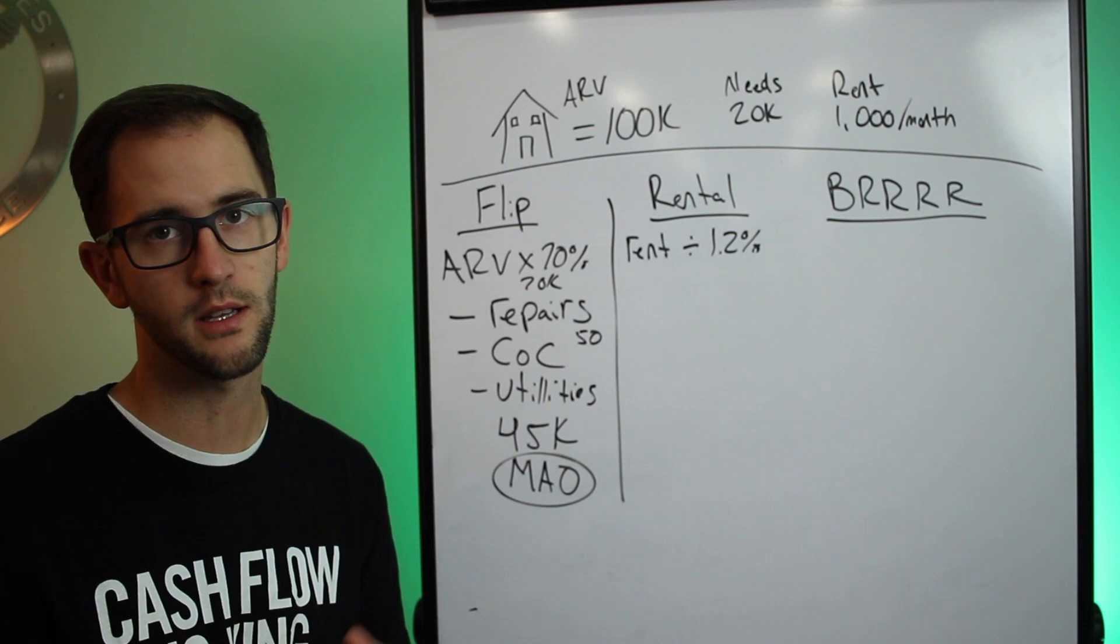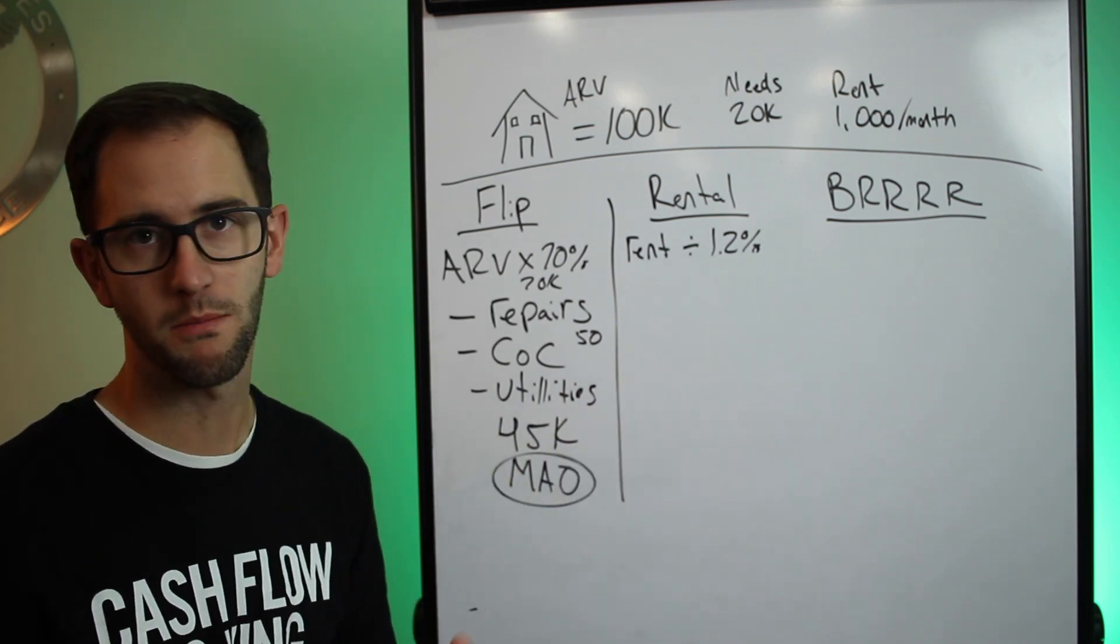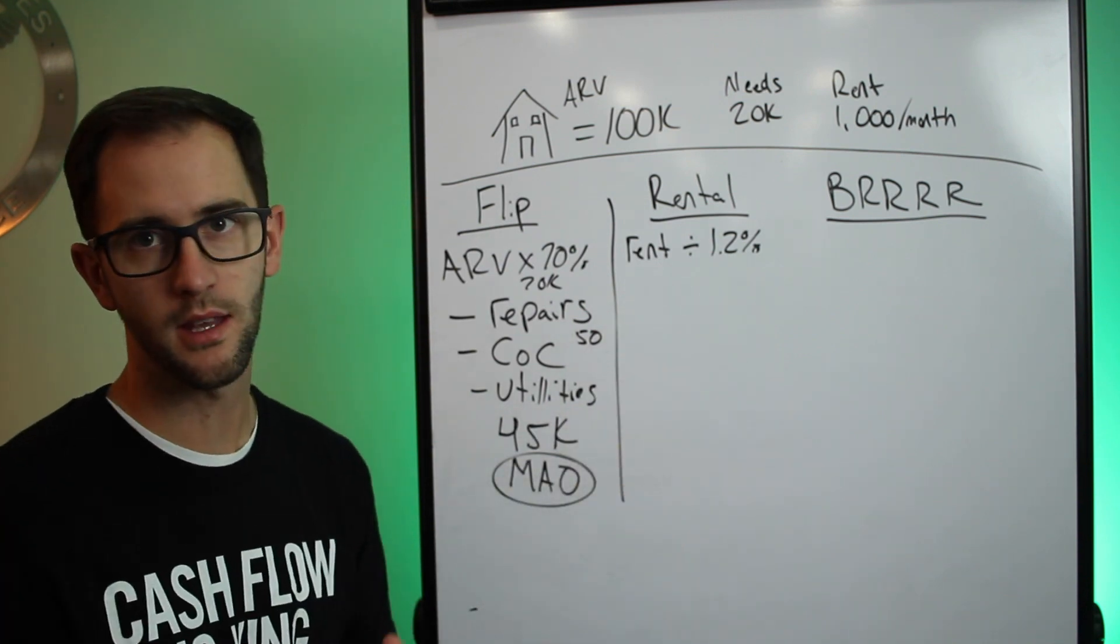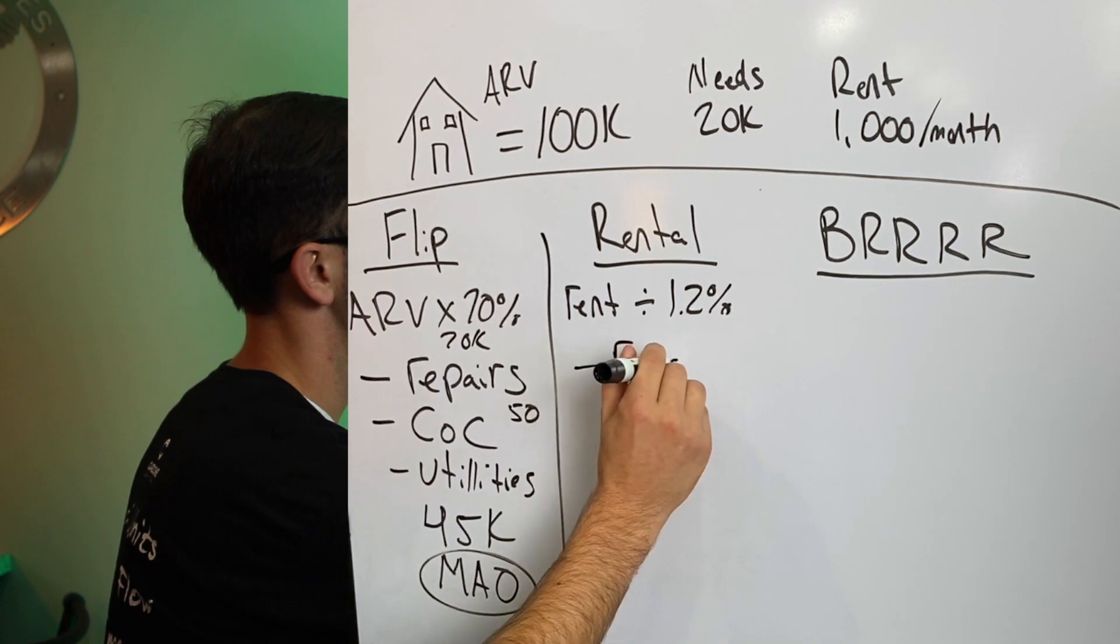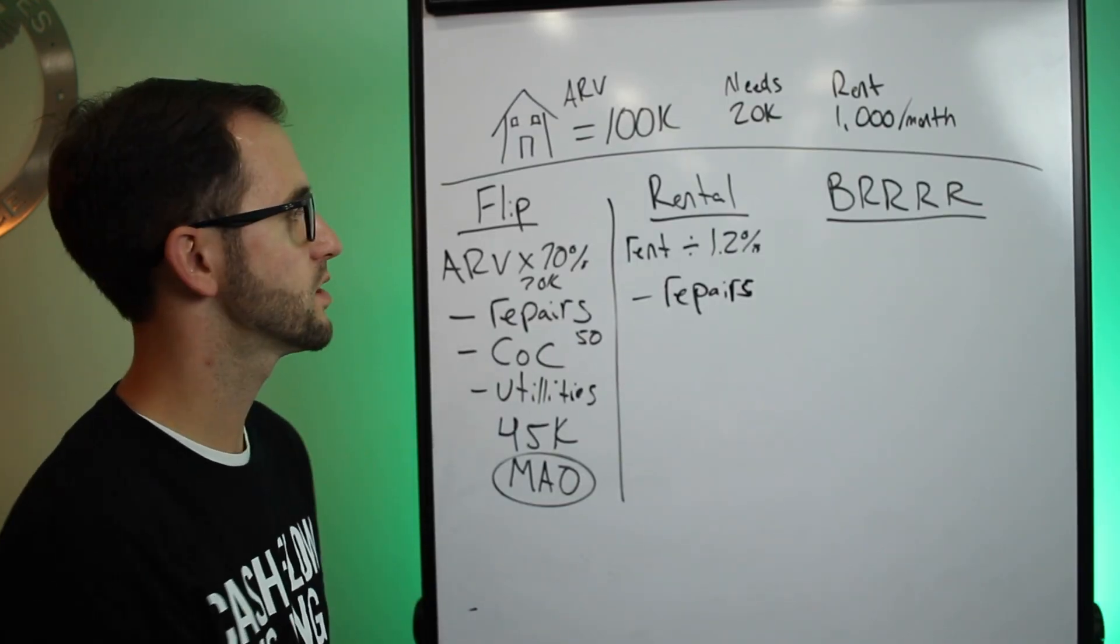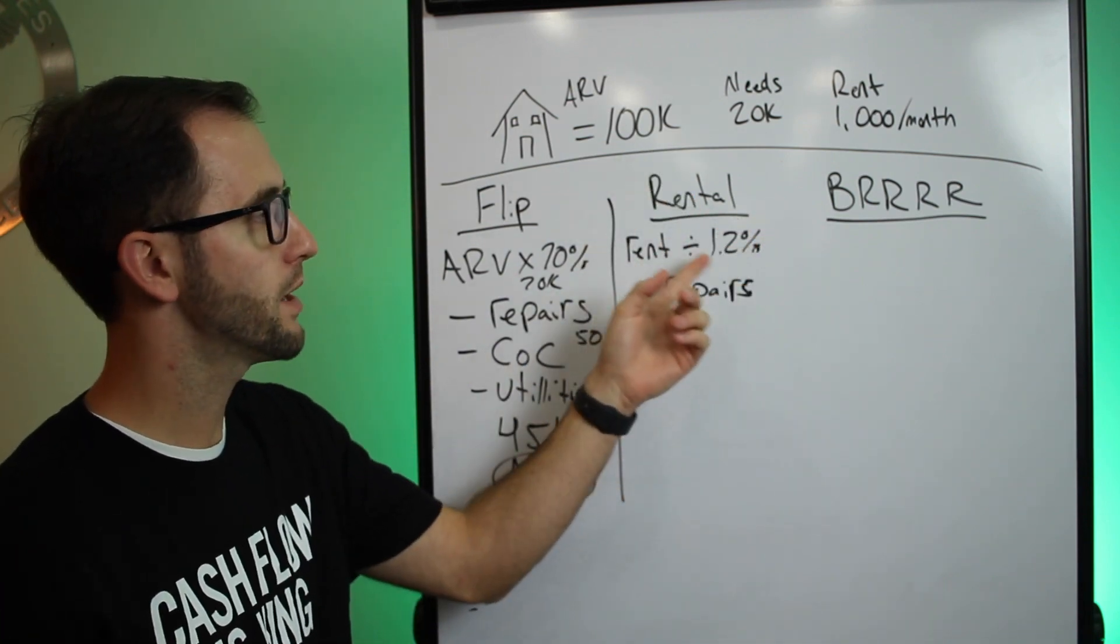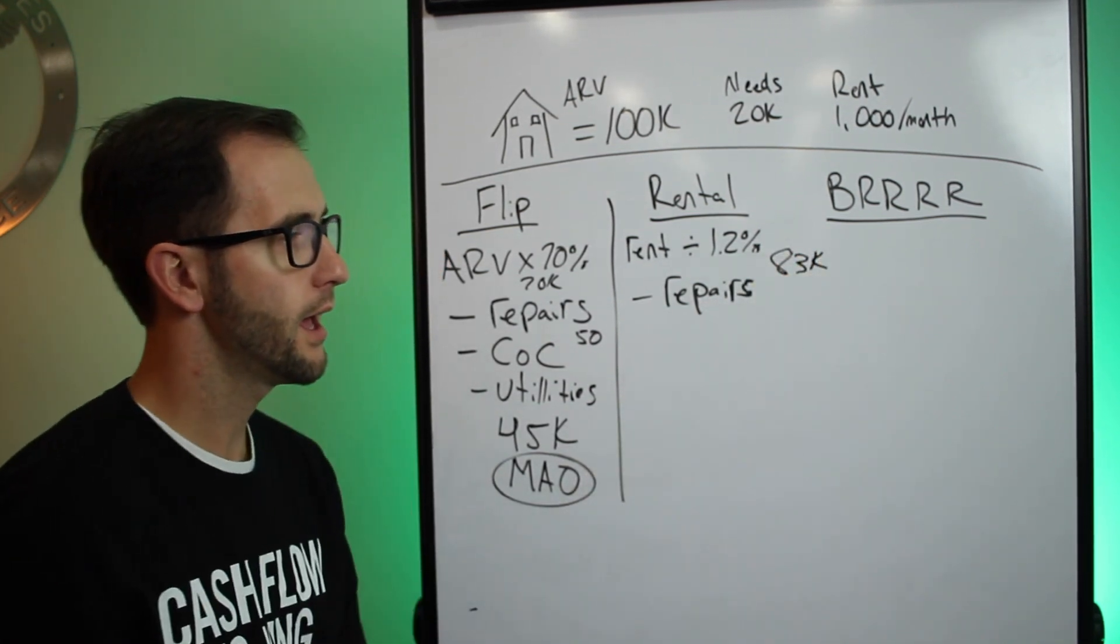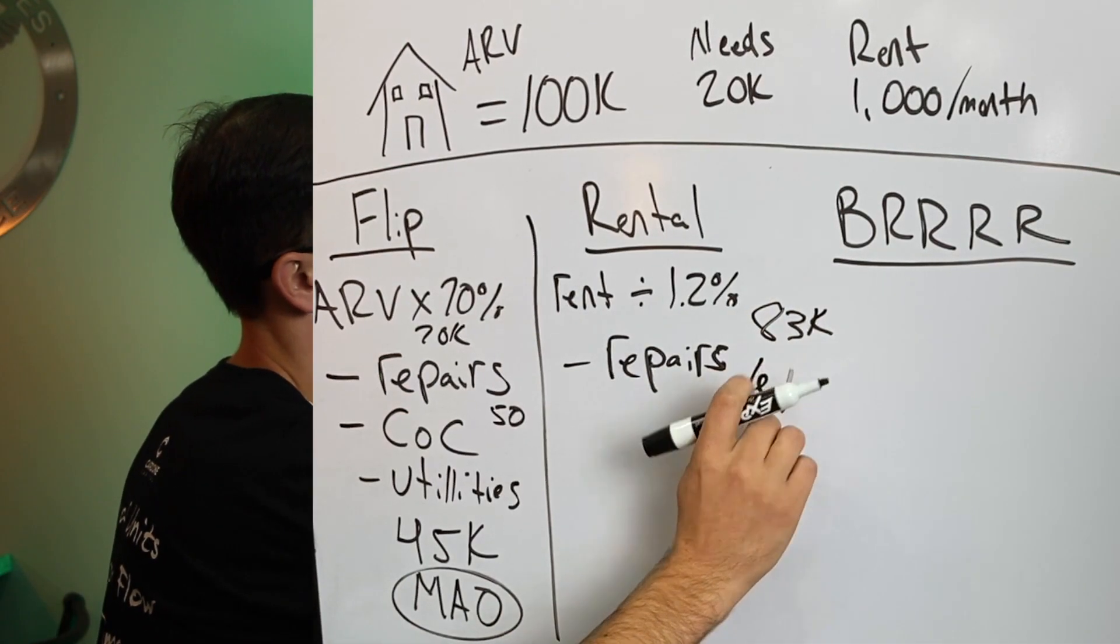If you use the 1% rule in your market, you can just change that to 1%. I need a little bit more meat on the bone for deals to make sense in my market. So I use the 1.2% rule. So when you divide the rent times that, that gives you the loan amount that you can have on the property and it's typically still cashflow. Again, you want to check your market, what kind of rates you're getting and adjust accordingly. But for this example, we'll use my market because it's convenient, right? So on $1,000 of rent divided by the 1.2% will give you $83K.